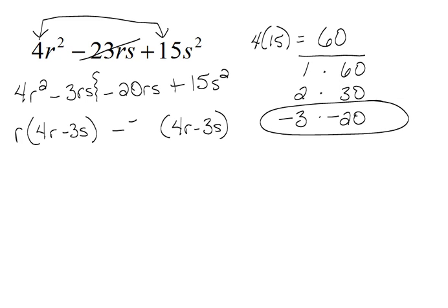And -5s times -3s would be positive 15s². So that is the correct factor to pull out.